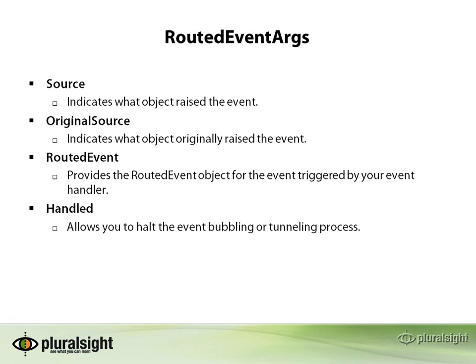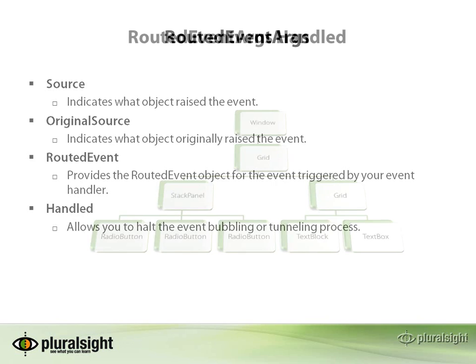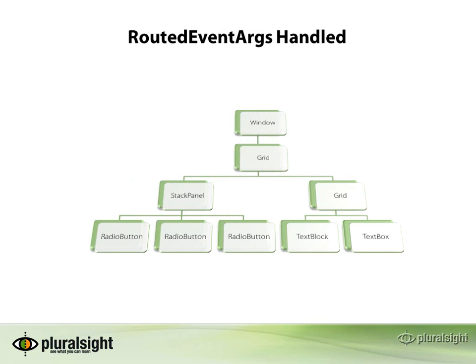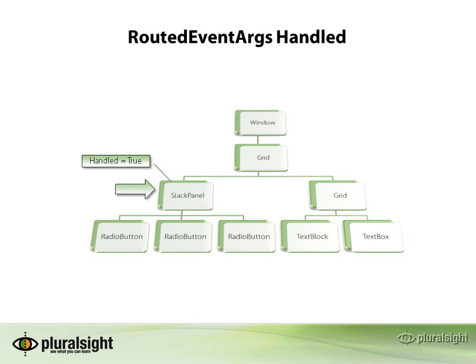The routed event property provides the routed event object for the event triggered by your event handler. The handled property allows you to halt the event bubbling or tunneling process. If handled on a bubbling event, the event will no longer continue up the containment hierarchy. The same goes for a tunneling event — if handled, the event will no longer continue down the containment hierarchy, and it also prevents the corresponding bubbling event from ever being raised.